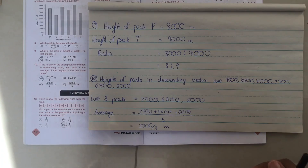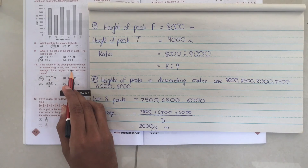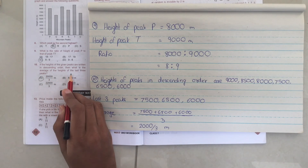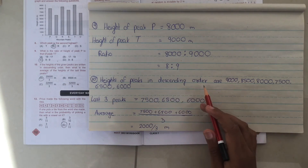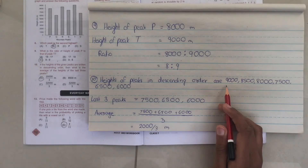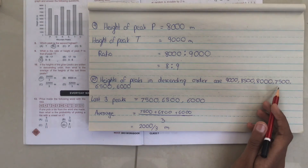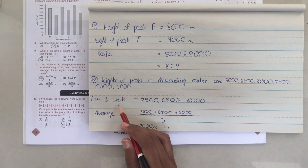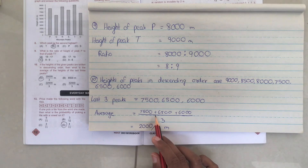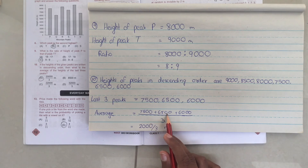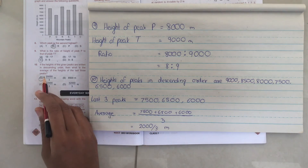The tenth question says: if the heights of the given peaks are written in descending order, what is the average of the height of the last three peaks? The heights in descending order are: 9,000, 8,500, 8,000, 7,500, 6,500, and 6,000. The last three peaks are 7,500, 6,500, and 6,000. The average is (7,500 + 6,500 + 6,000) ÷ 3 = 20,000 ÷ 3 meters, option A.